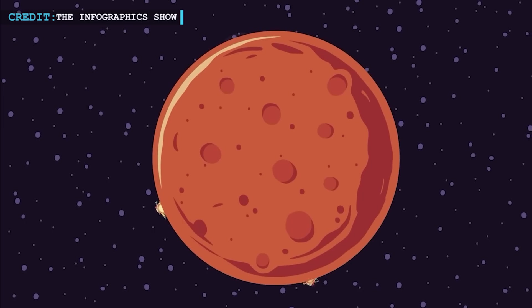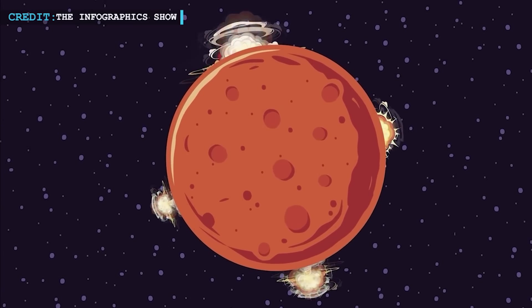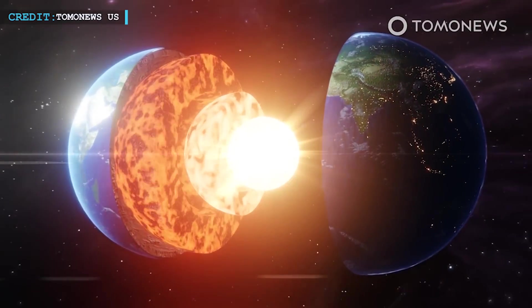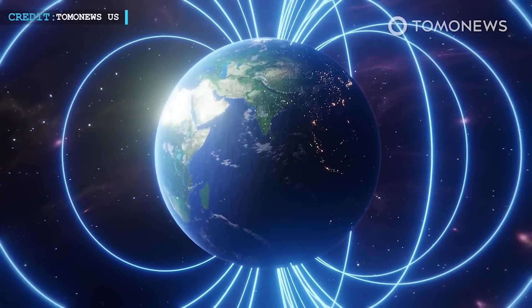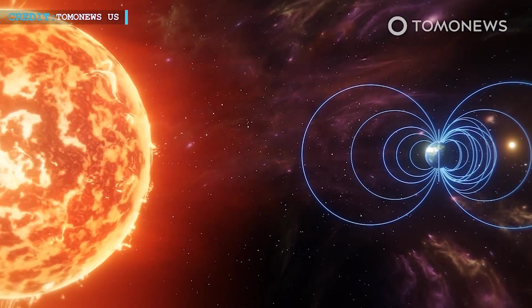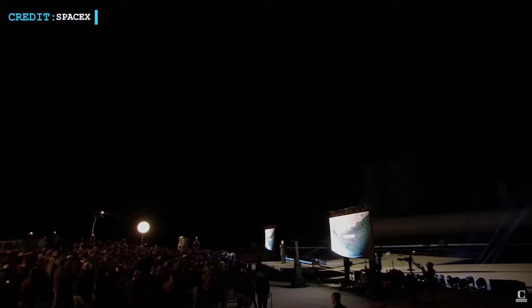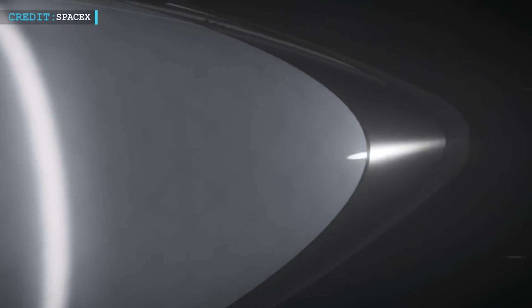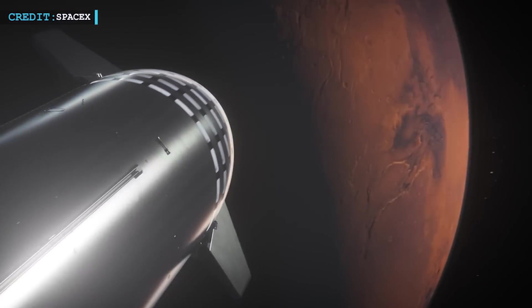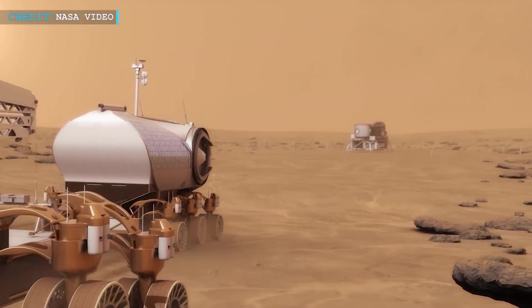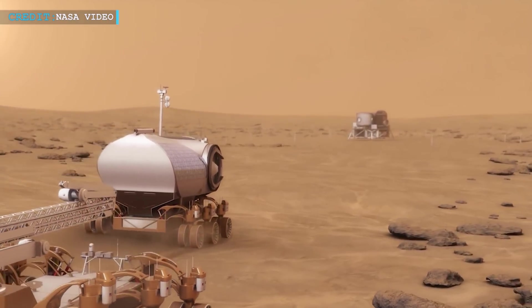Another major obstacle to human exploration on Mars is the high levels of radiation in space. Earth's strong magnetic field and thick atmosphere provide protection against harmful radiation from the Sun and other celestial sources. But the big names in the space tech industry, like Mr. Elon Musk, are very determined in their journey towards Mars, and they will adapt and find new ways to ensure their survival in the face of the unique conditions on the Red Planet.